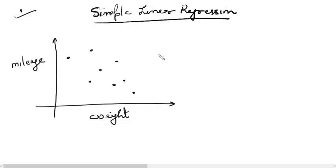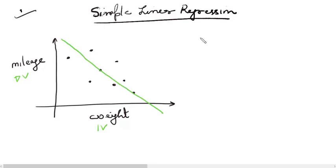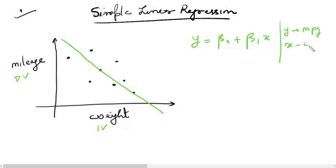Coming back to the same example where we plotted a scatter plot of mileage with respect to weight: mileage is our dependent variable and weight is the independent variable. We can clearly see a linear relationship between them, and hence if we draw a straight line this would best describe the relationship. So we can write the equation as y = β₀ + β₁x, where y is mileage (miles per gallon) and x is weight.